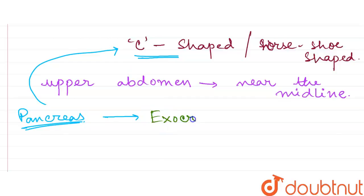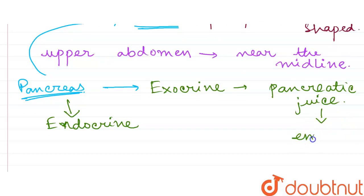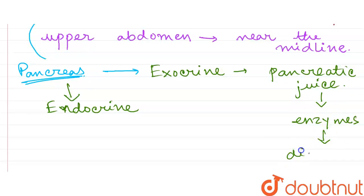Exocrine portion secretes pancreatic juice, and this pancreatic juice consists of some enzymes that help in digestion process. These enzymes help in digestion process.